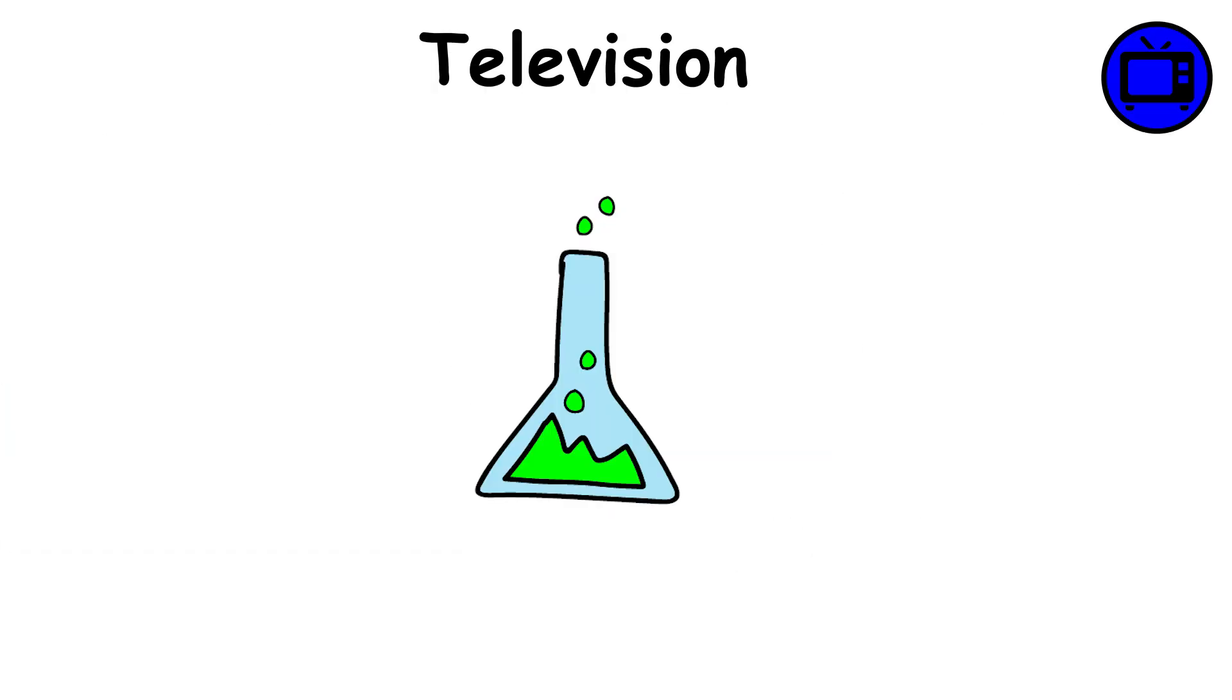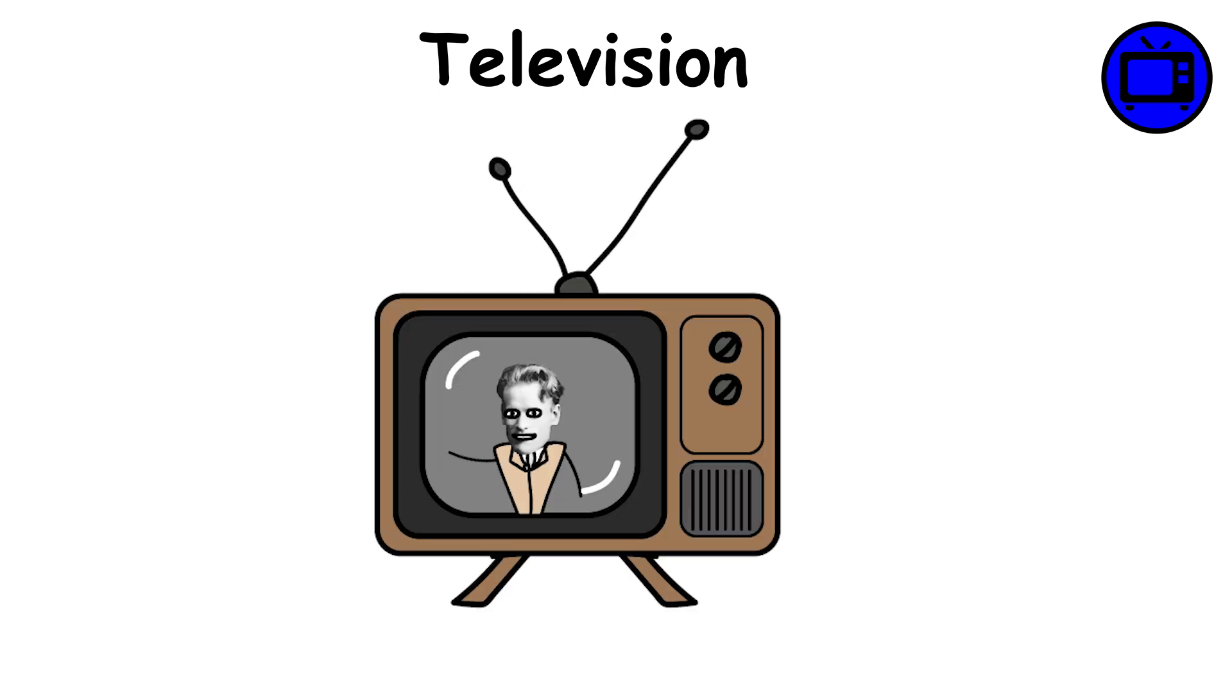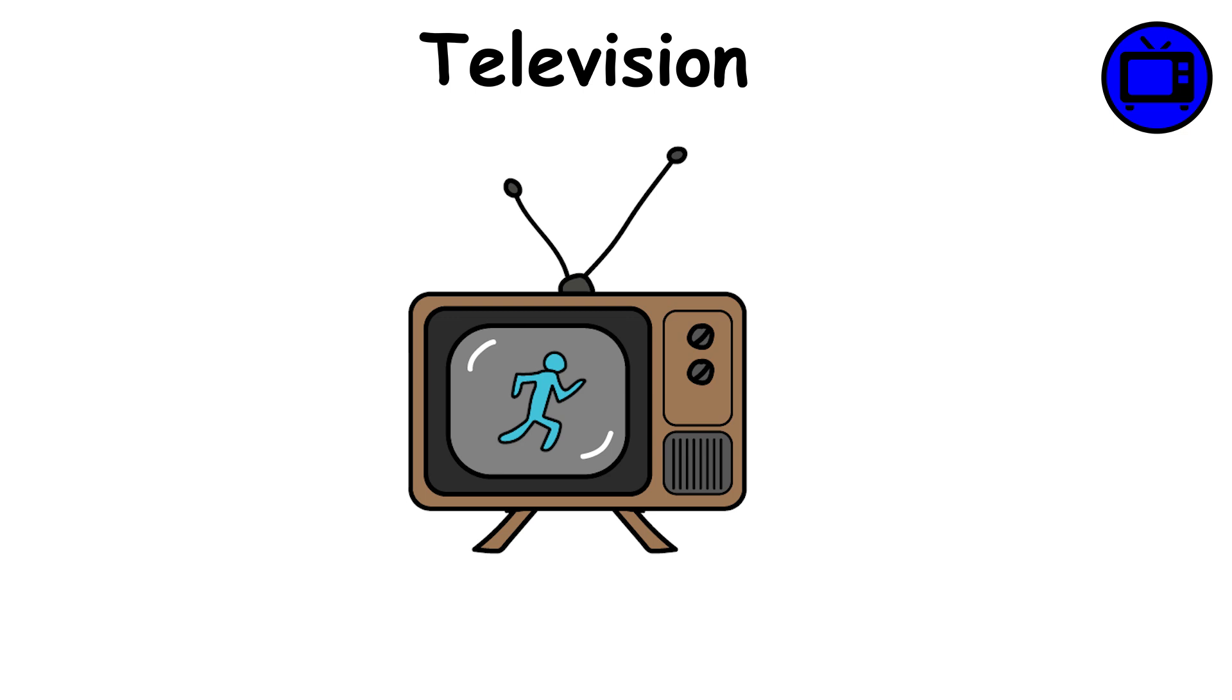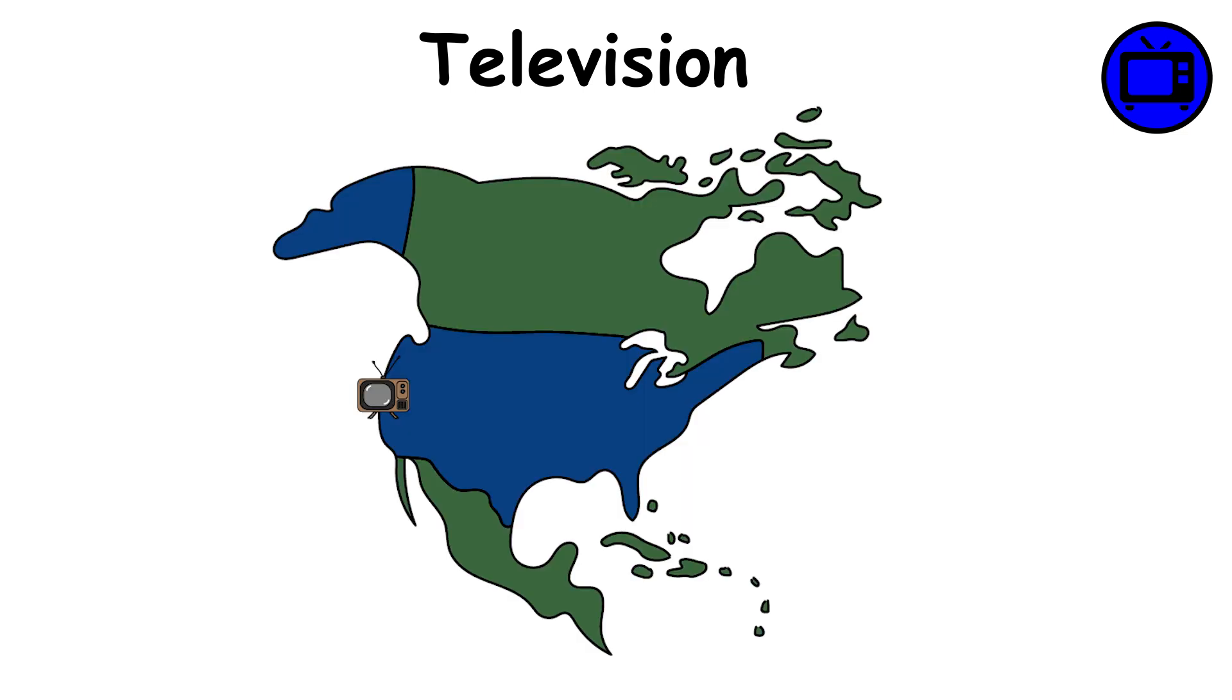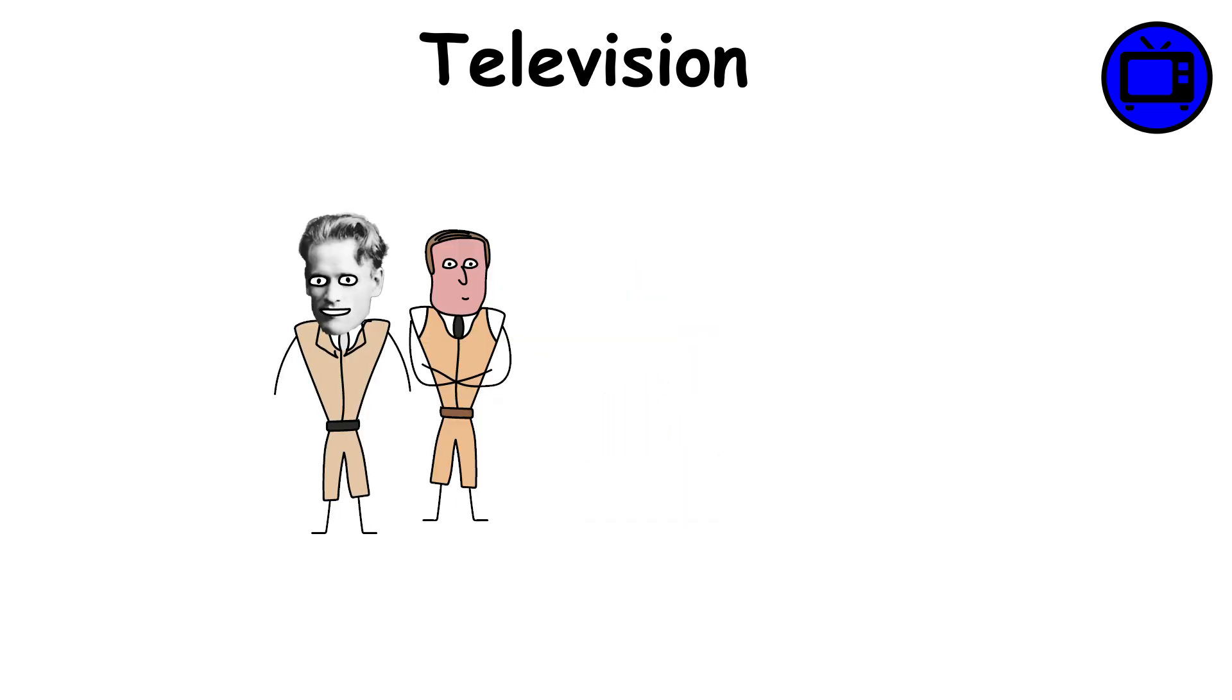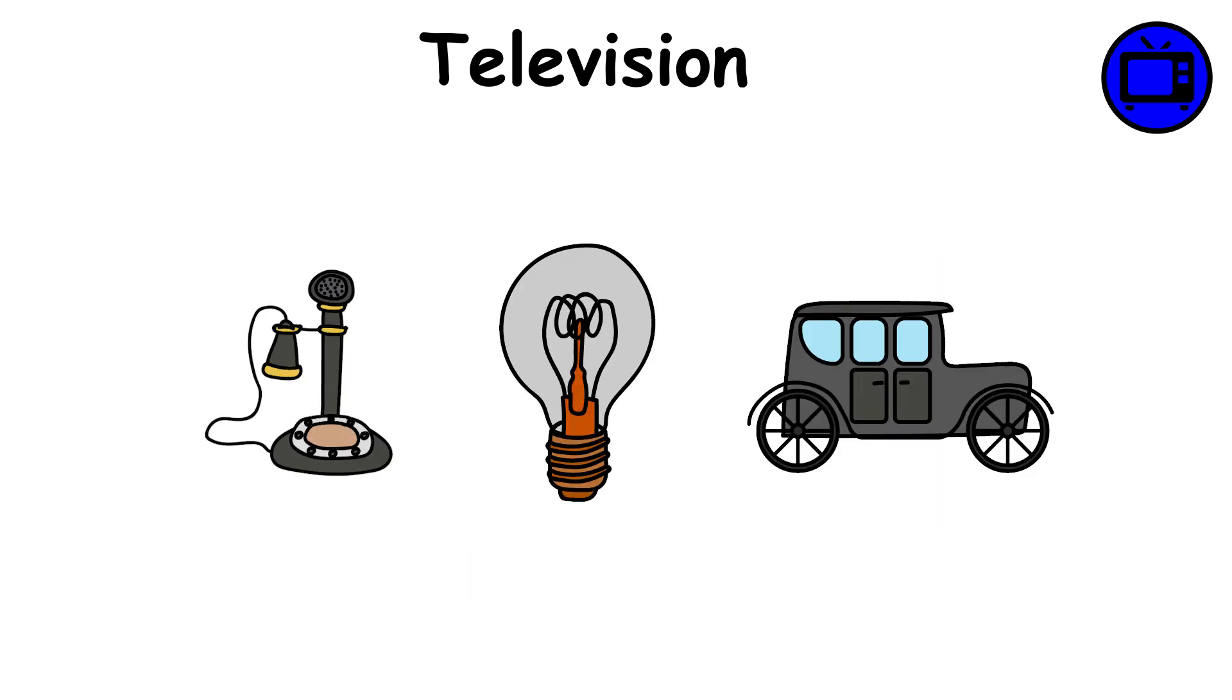Television. Early experiments of the television began in the 1920s, but it was American inventor Philo Farnsworth who demonstrated the first fully electronic TV system in 1927. His invention converted moving images into electrical signals that could be transmitted and displayed on a screen. By the late 1940s, television had spread rapidly across the United States, becoming a centerpiece of home life. It transformed how people received news, entertainment, and advertising, shaping culture and politics in the 20th century more than almost any other technology.